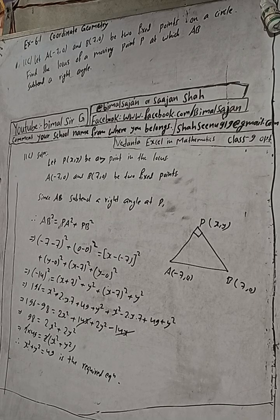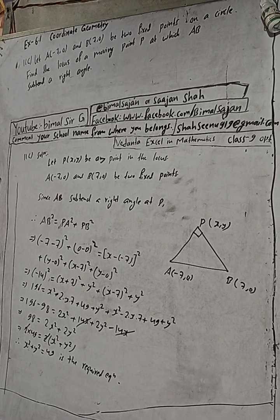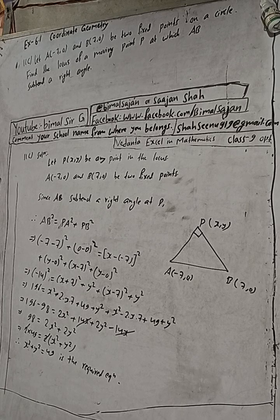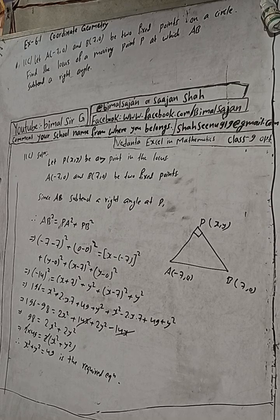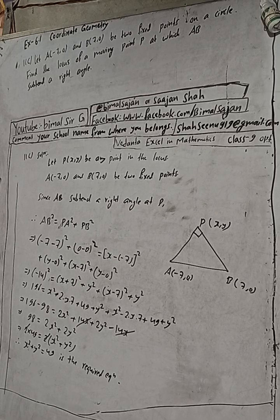In the book it is given x² + y² = 49 — correct! So this is the solution, dear students. Tomorrow is Diwali, so Happy Diwali — wish you all Happy Diwali! Please share the videos with your friends.